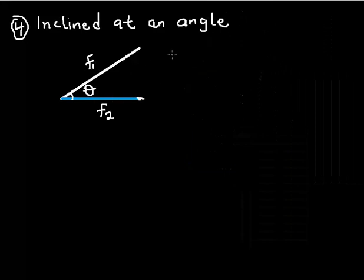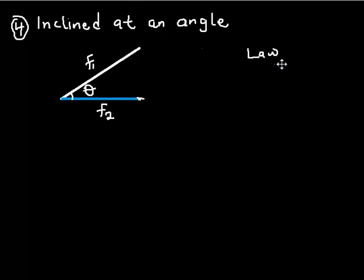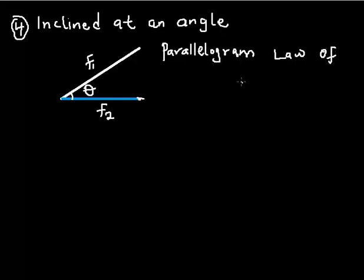When you have two vectors F1 and F2 inclined at an angle, to evaluate the resultant we need the help of a law called the Parallelogram Law of Vectors. What does it state? If two vectors inclined at an angle are represented in direction and magnitude by the adjacent sides of a parallelogram...